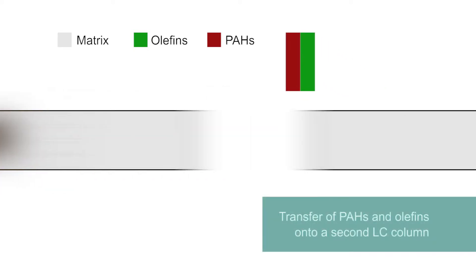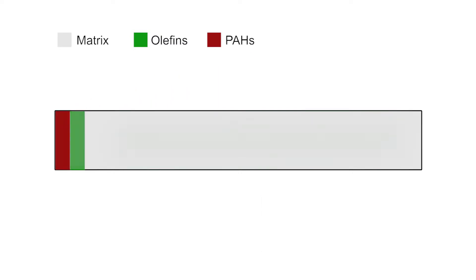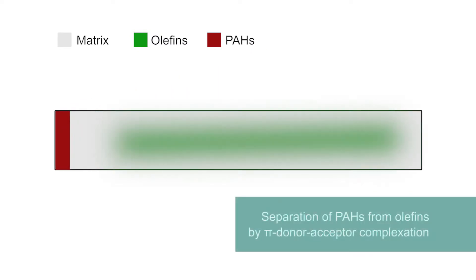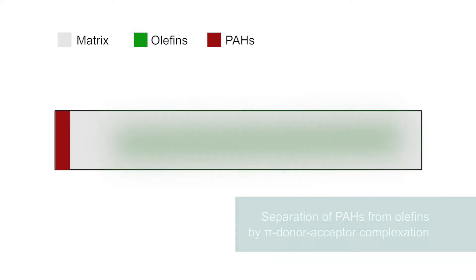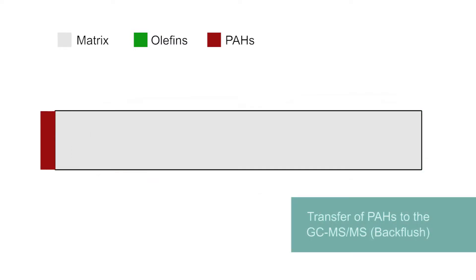The PAHs and olefins are sent to a second LC column. Applying pi donor acceptor complexation, the PAHs are separated from the olefins. The PAHs are transferred to the GC-MS-MS by a backflush.